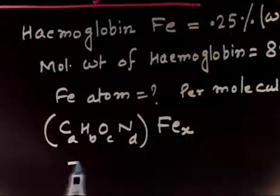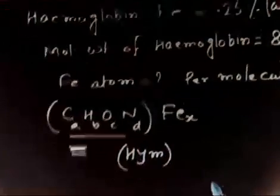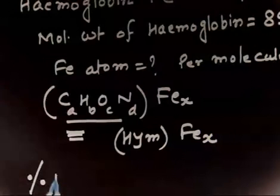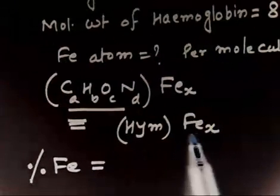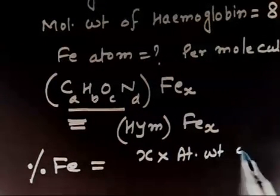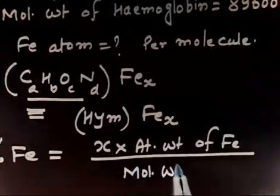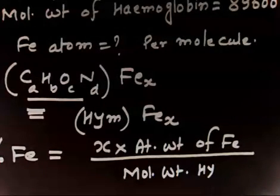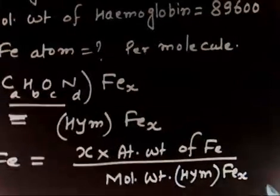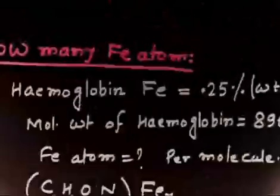I can abbreviate the whole formula — let us call this part of the molecule HYM·Fe(X). So now this is my formula. I can find the percentage of iron, which is given as: X times the atomic weight of iron, divided by the molecular weight of hemoglobin (HYM·Fe(X)), times 100. The percentage of Fe is 0.25%.